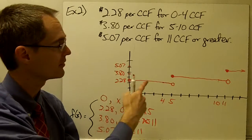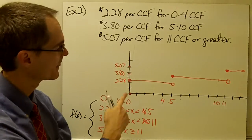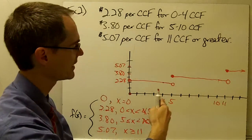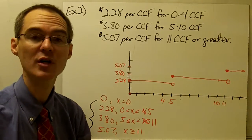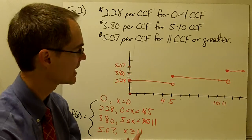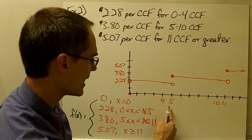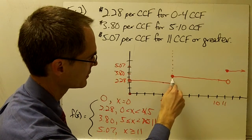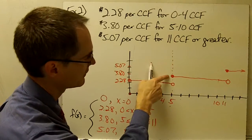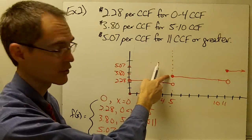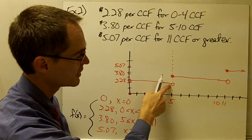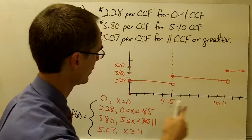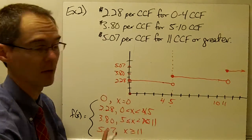Notice about this graph — it is in fact a function. That is, it passes the vertical line test. Anywhere on my graph that I draw a vertical line, I'm only going to hit the graph in one place. Even if I draw my line right here at one of these break points, it's only going to hit the graph at the one place where the solid circle is — not at the open circle. Same thing for this break point, and same thing at zero.